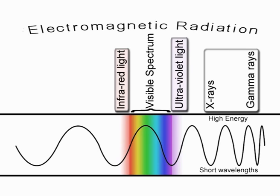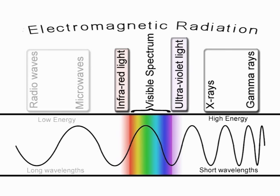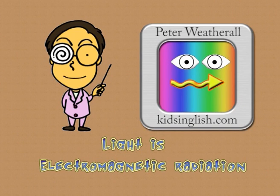At the lower end of the spectrum are microwaves and radio waves. Radio waves can be hundreds of meters long and are very low in frequency and energy. So when it comes to light, there's a lot more than meets the eye.